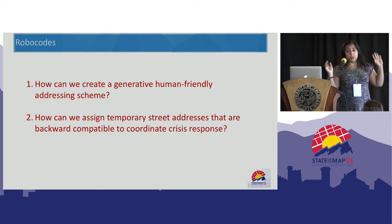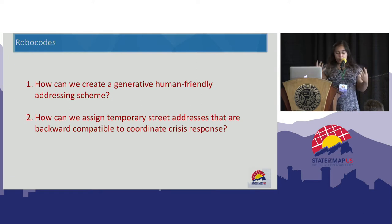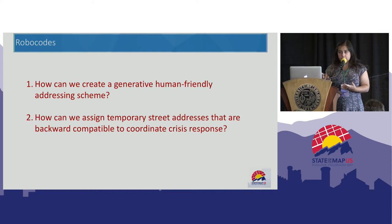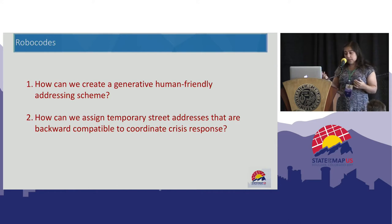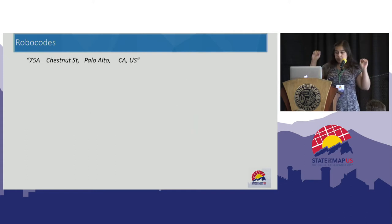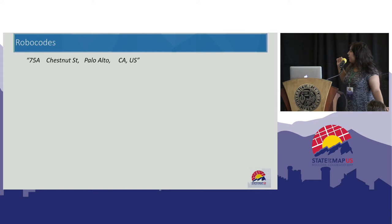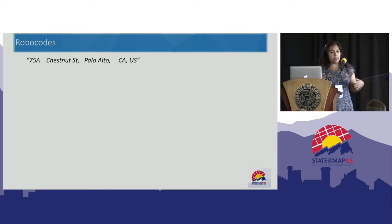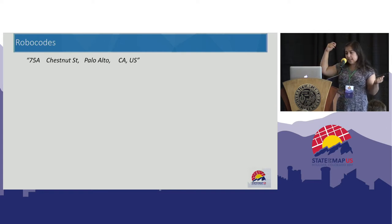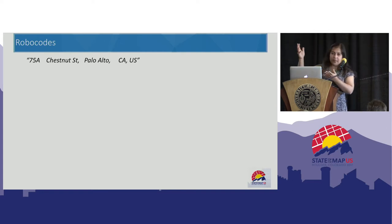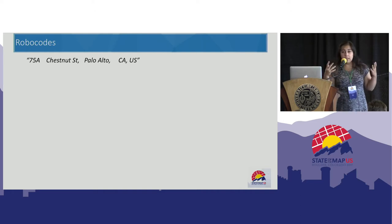Based on that research and those computational approaches, we pose the question: how can we create a generative, human-friendly addressing scheme that is automated but still usable by humans? And how can we assign temporary street addresses that are backward compatible to coordinate crisis response? Think about a generic US street address: 75A Chestnut Street, Palo Alto, California, US. Easy to understand — it's Chestnut Street, at marker 75, with A meaning apartment A. How can we convert that to an automatic or generative scheme?